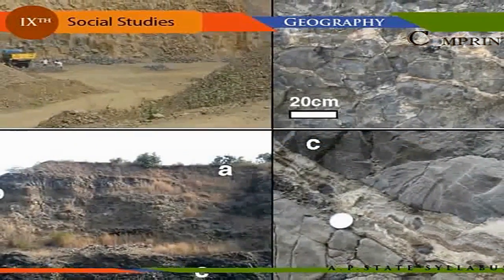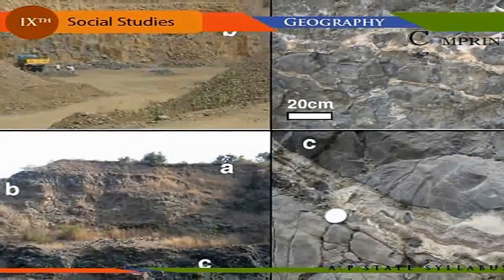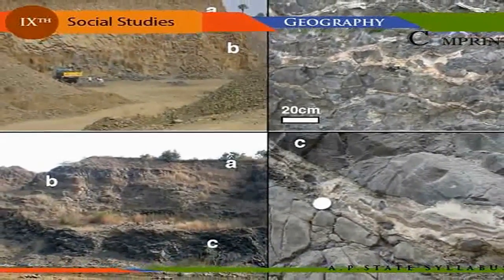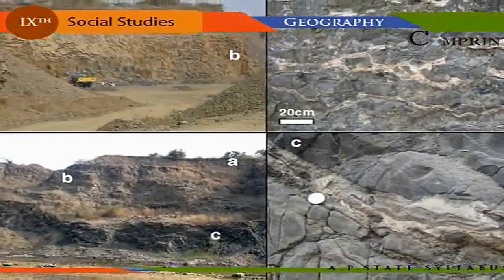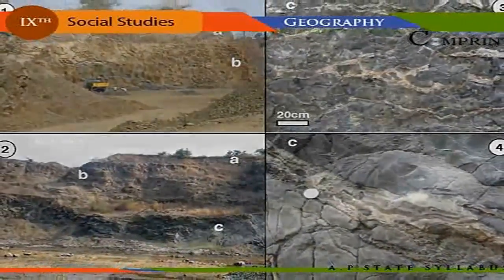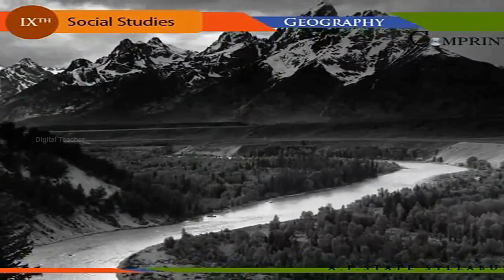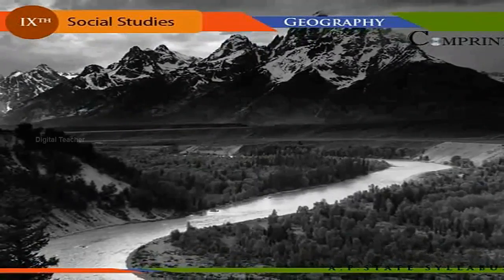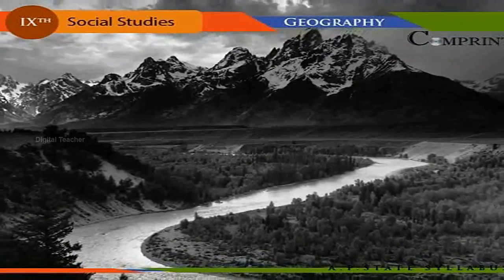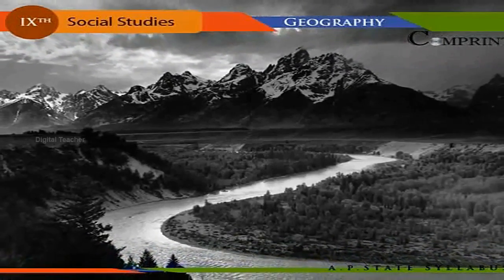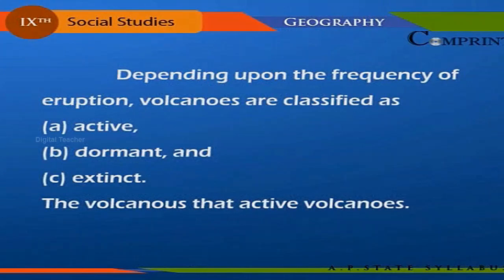The fissure type of eruption involves a series of vents present along a fault line in the Earth's crust, discharging enormous quantities of lava, leading to the formation of lava plains and plateaus usually hundreds of square kilometers in area. The valley of the Snake River, the Columbia Plateau, and the Deccan Traps region of peninsular India are cited as examples of this type of eruption.